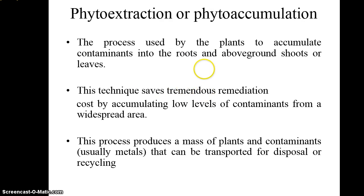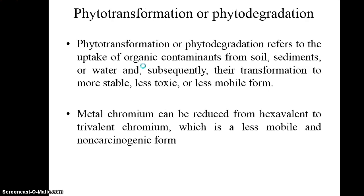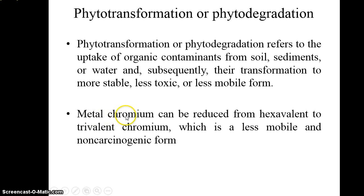Now we will discuss the types one by one. Phytoaccumulation: in this process, the plant accumulates the contaminant or pollutant in the roots and leaves. Phytotransformation or phytodegradation: the plant converts the pollutant into a more stable or less toxic form. For example, the metal chromium is reduced from hexavalent to trivalent valency, which is more stable, less mobile, and non-carcinogenic.